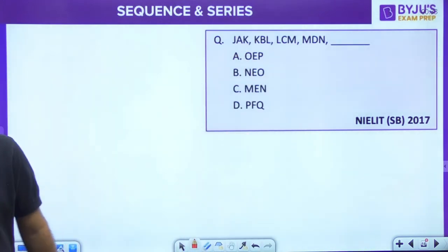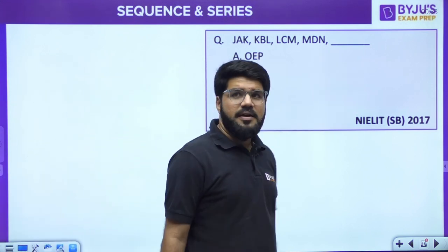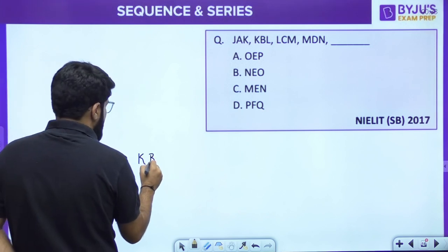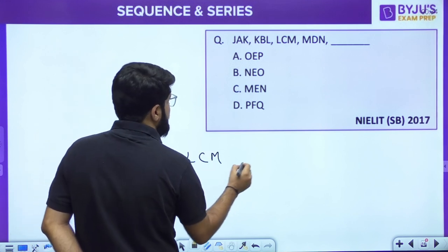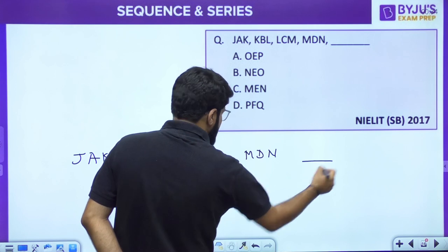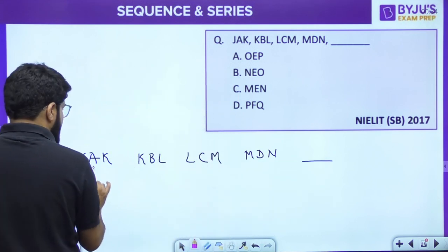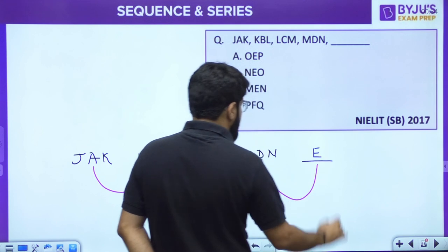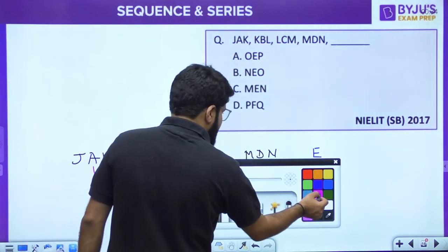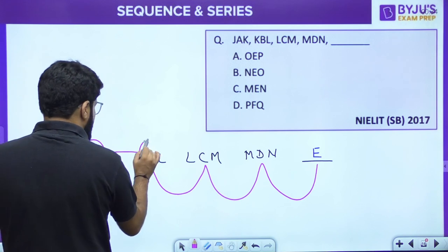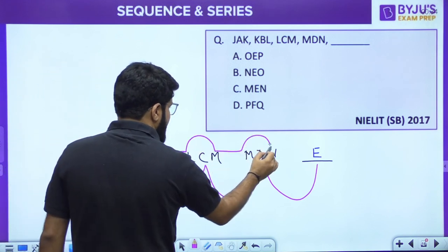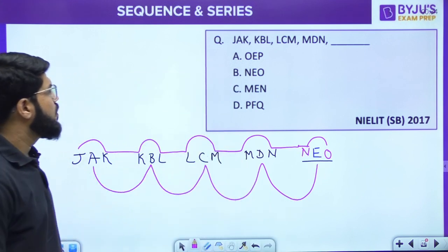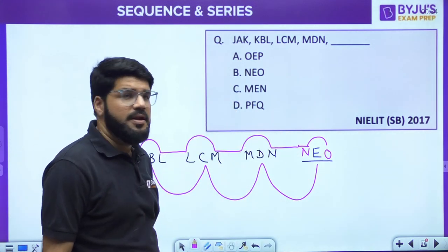Scientist B Paper, another triplet: jak, kbl, lcm, mdn, __. The central letters are a, b, c, d — so next is e. The first letters j, k, l, m — next is n. The last letters k, l, m, n — next is o. So the answer is neo. Option B, neo, is correct.